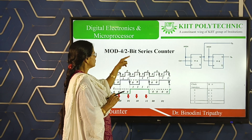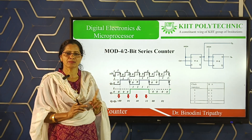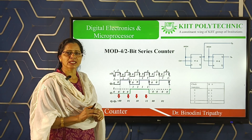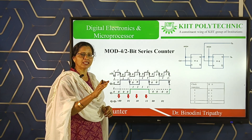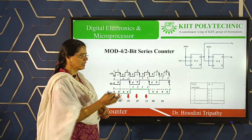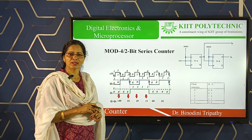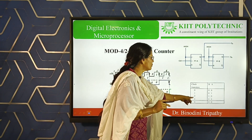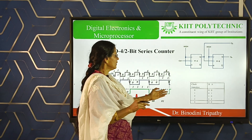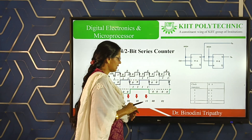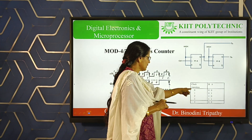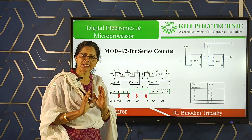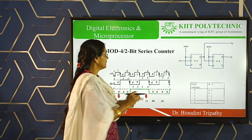So mod-4 and 2-bit: we can write two points about this. First, by definition, it is a series counter that can count a maximum of 4 sequences, starting from 0 to 3, or in binary form from 00 to 11. Then, the number of bits in each count is 2. Also recall: the number of bits indicates the number of flip-flops. So here, 2-bit means 2 flip-flops.